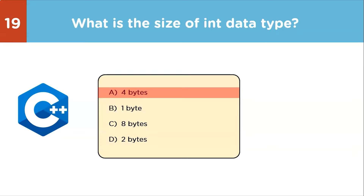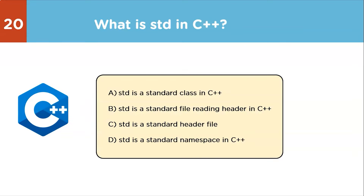Next question: what is std in C++? Options include standard class, standard file reading header, standard header file, and standard namespace. The correct answer is that std is the standard namespace in C++. It is used while writing 'using namespace std' and tells the compiler to take everything in the standard namespace.